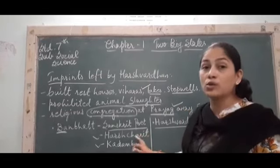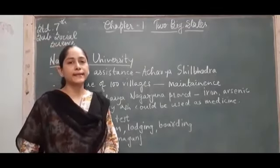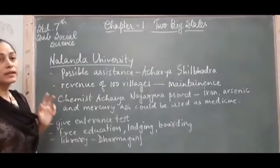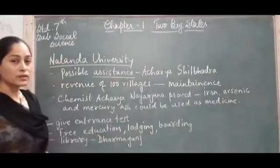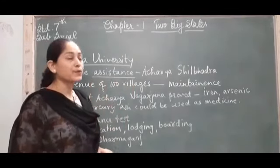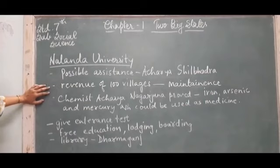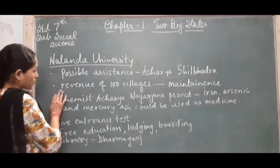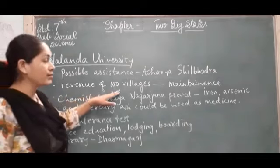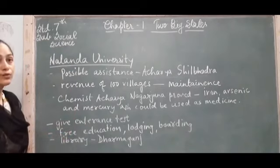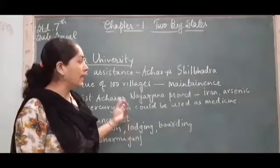Nalanda University was one of the world-famous universities during that time. Harshvardhan gave all possible assistance to Nalanda University. The revenue of 100 villages was given to Nalanda University for its maintenance and upkeep. Revenue is the income that goes to the king, and this revenue from 100 villages was used to maintain the university properly, as scholars from different countries came to study there.